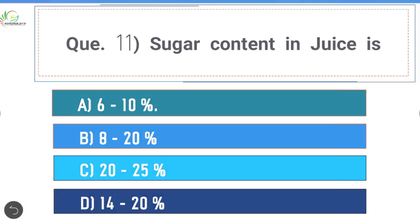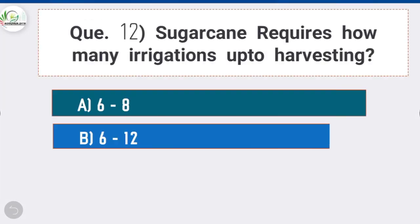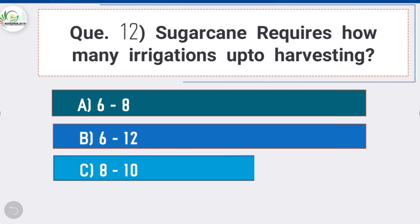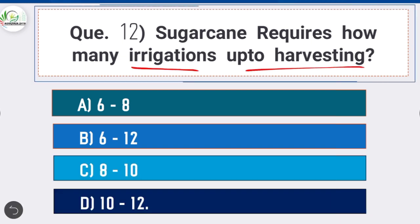Question 12: Sugarcane requires how many irrigations up to harvesting? Option D is correct: 10 to 12. On average, sugarcane requires 10 to 12 irrigations up to harvesting.